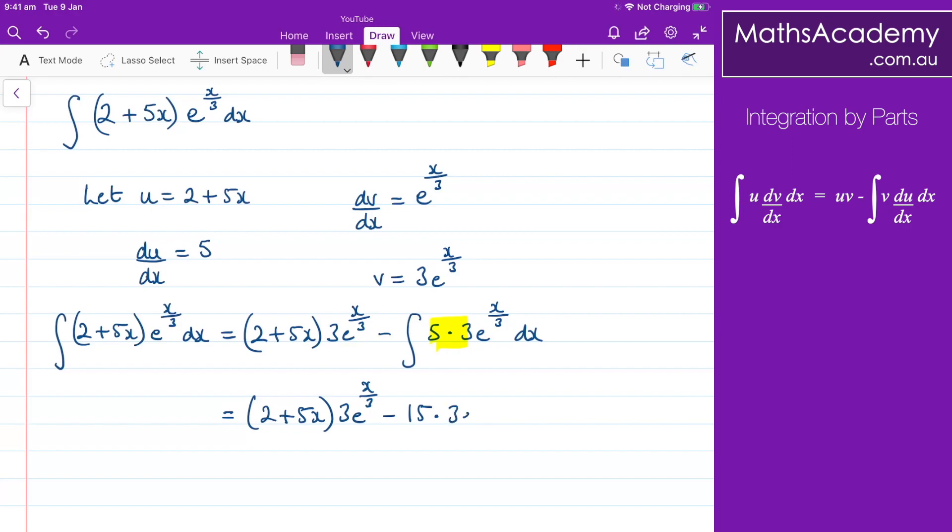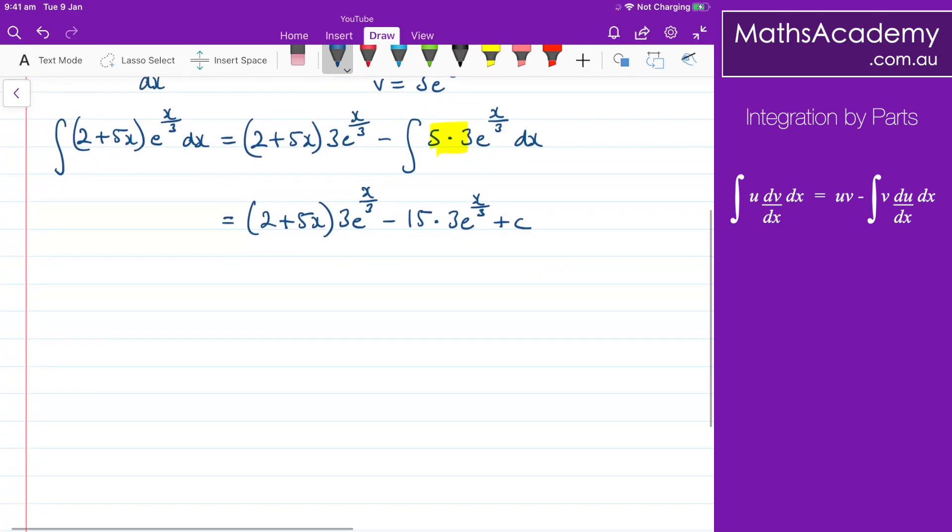Now I'm noticing that I have the 3e to the x over 3 here and the 3e to the x over 3 here, so I could factor those out.